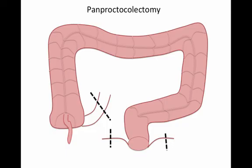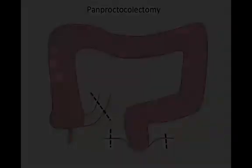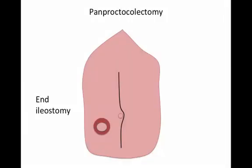Finally, panproctocolectomy. As the name suggests, this means removal of all of the rectum and colon. Indications include synchronous cancers or inflammatory bowel disease such as ulcerative colitis affecting the whole of the colon including the rectum. The proximal division is made at the distal ileum, and the distal division is made as in an abdominoperineal resection — outside of the abdominal cavity, removing the anus and rectal compartment. Once this is performed, it is a necessity to have an end ileostomy, which is irreversible.